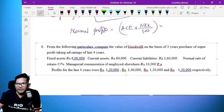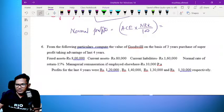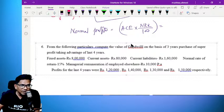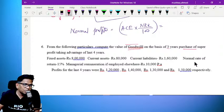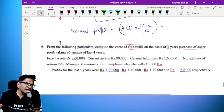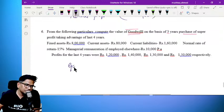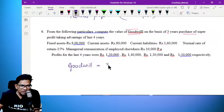Very interesting question. We can definitely solve this and go for the next. From the following particulars, compute the value of goodwill on the basis of three years purchase of super profit. Three years into super profit.